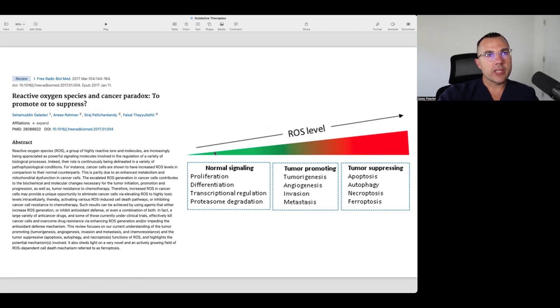So here we have a continuum. At some level on the lower end of the spectrum, but not completely shut down, we have normal signaling. Then when we have increased amounts of ROS, we have a tumor promoting effect working through a variety of signaling pathways, including hypoxia-inducible factor one alpha.